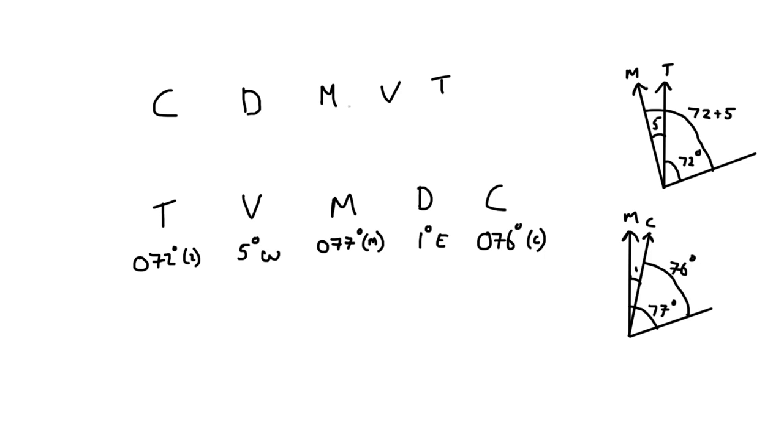Of course, the exact same thing happens the other way around. If we start off with the compass bearing, say we measure an angle of 272 degrees compass, and we want to be able to plot it on the chart so we can get a fix. We know that our deviation from our deviation card is in this case going to be 2 degrees west.